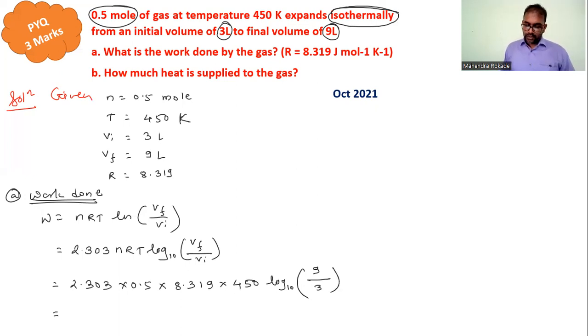We have to solve this one. 9 by 3 is 3, so 2.303 multiplied by 0.5 multiplied by 8.319 multiplied by 450 multiplied by log to the base 10 of 3.